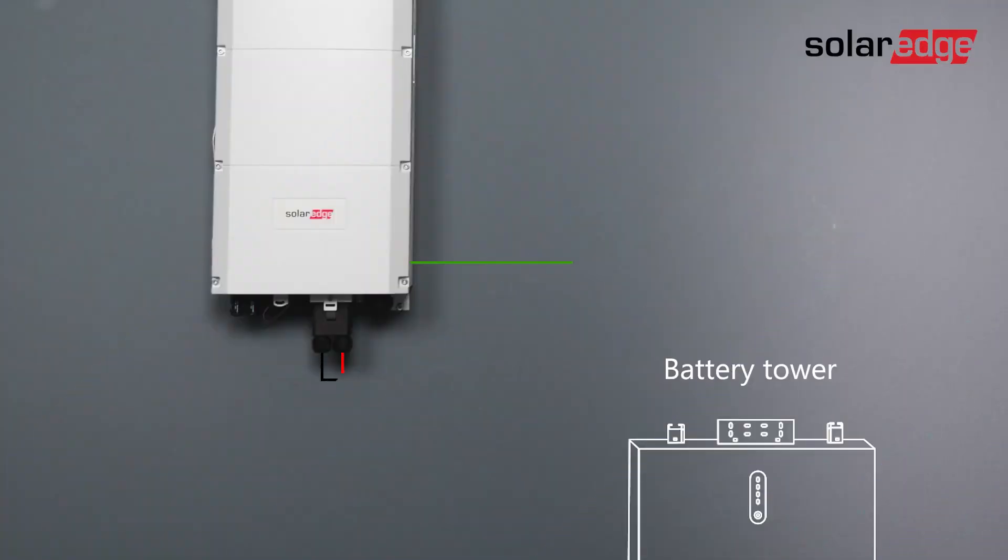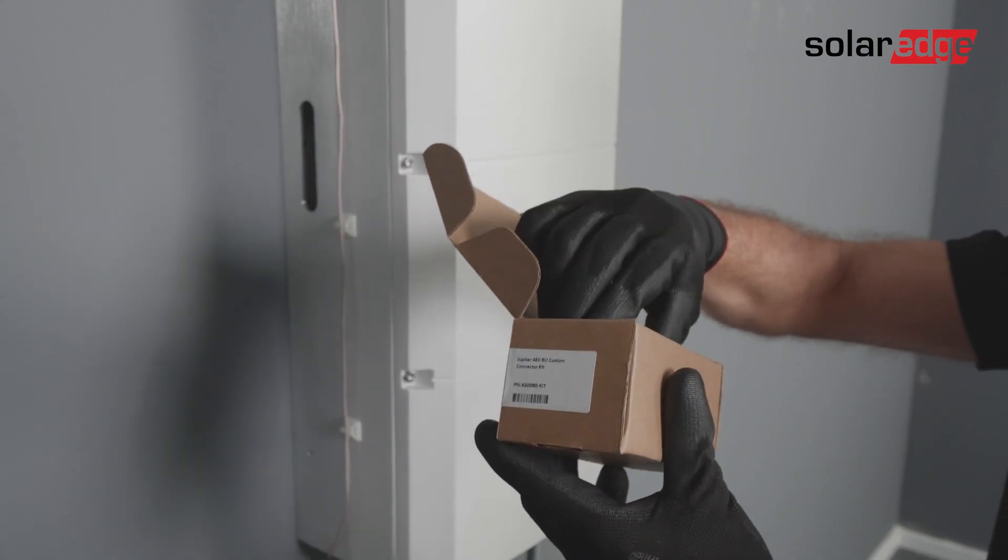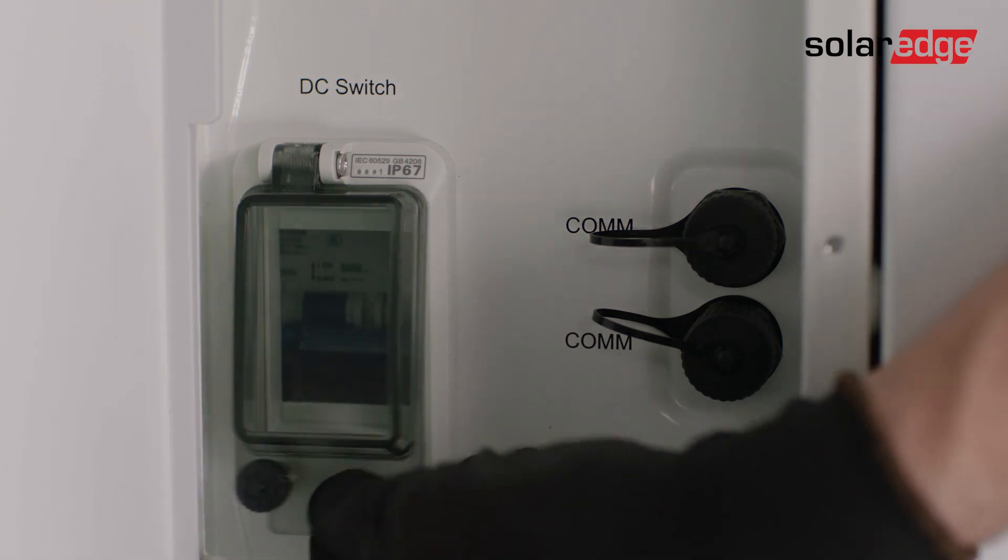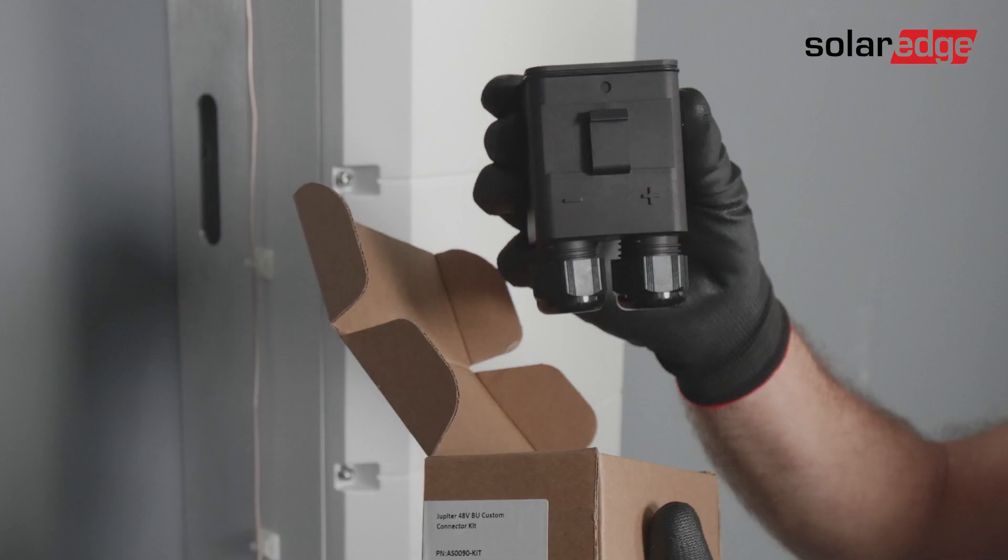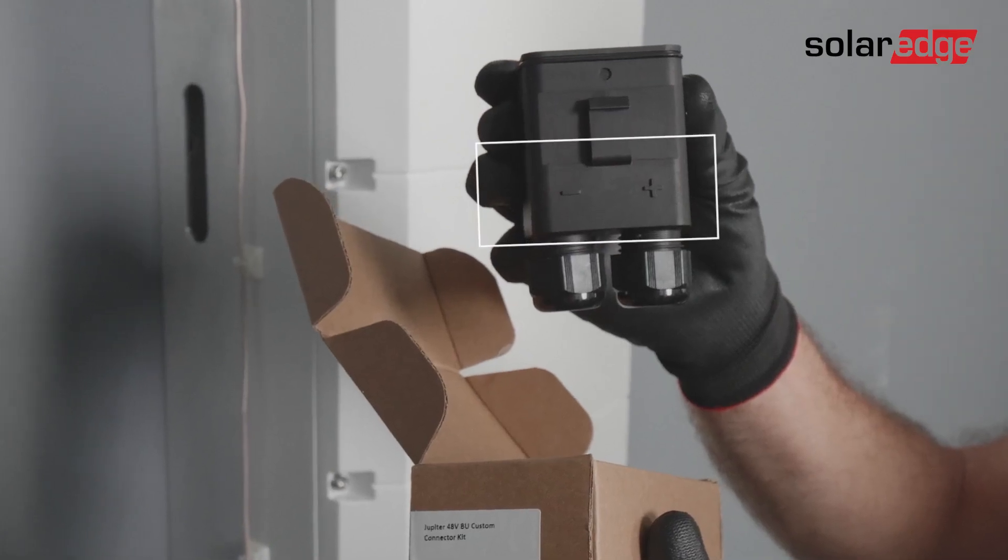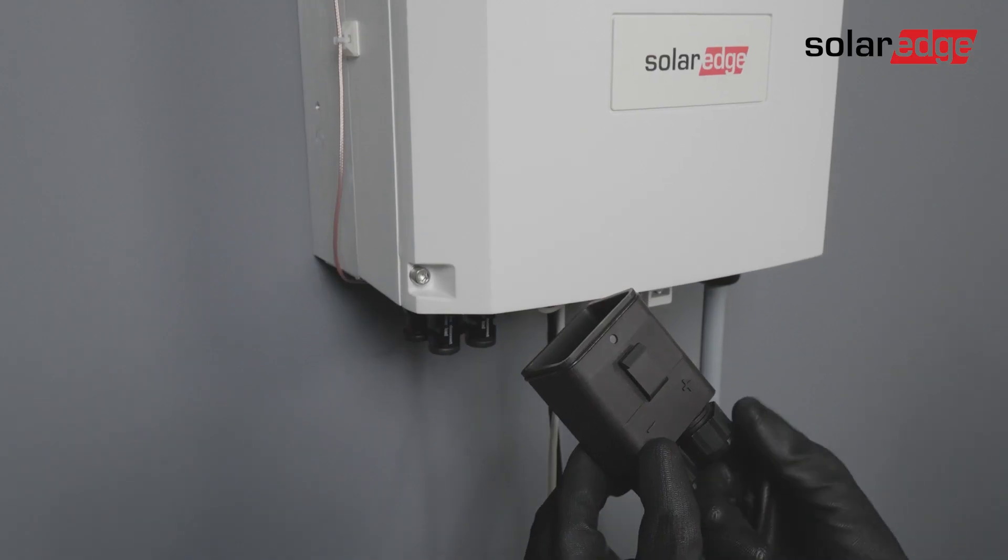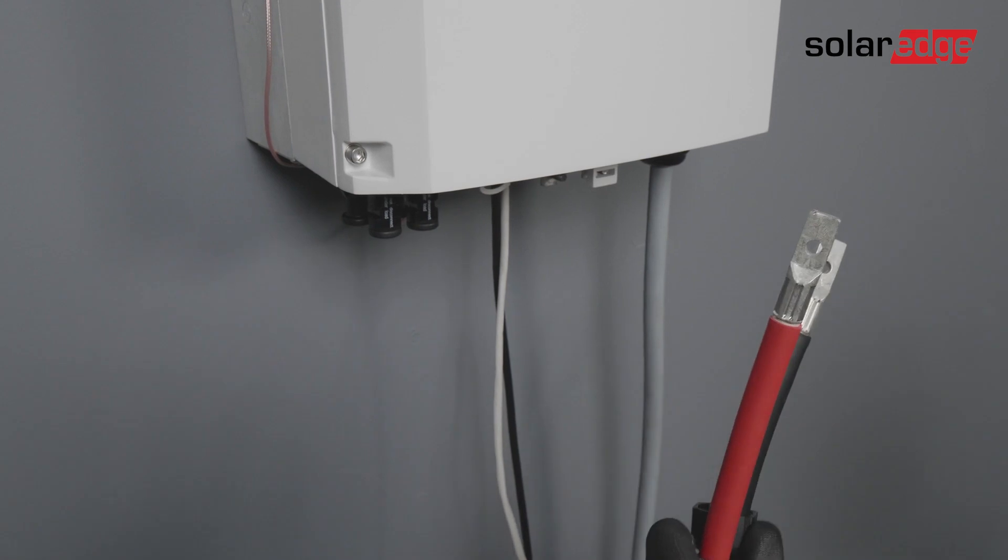Now, let's connect the ground and DC cables to the battery. Take the DC connection kit out of the box. Make sure that all battery module's circuit breakers are off before making any connection to the inverter. Please note the polarity as noted on the connection kit and that the snap is facing you. Open the cable gland nuts and pass the battery DC cables through the glands.